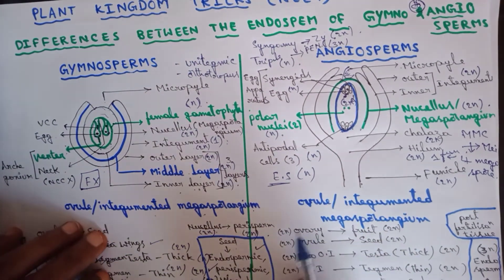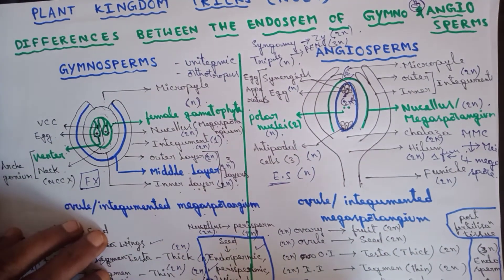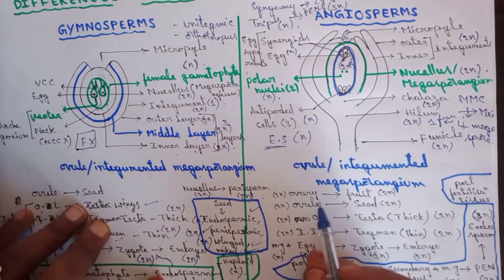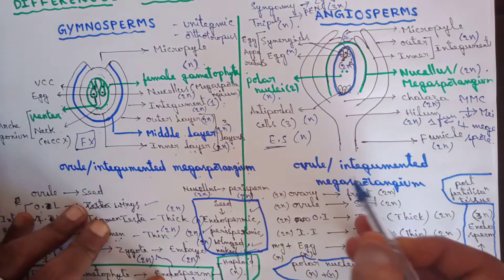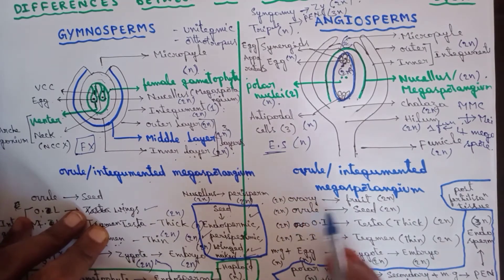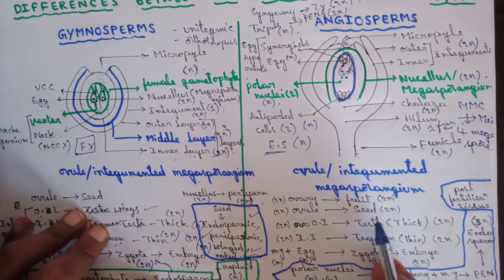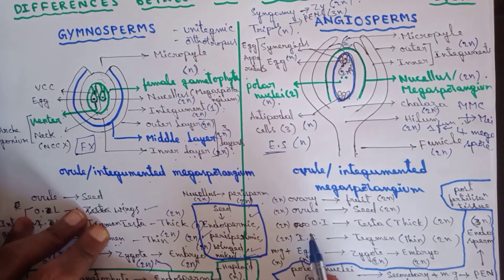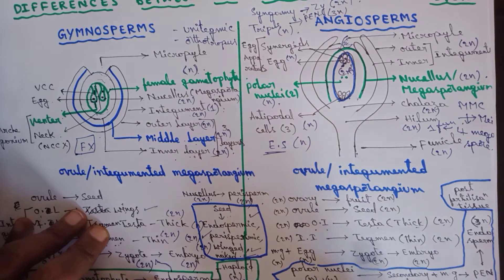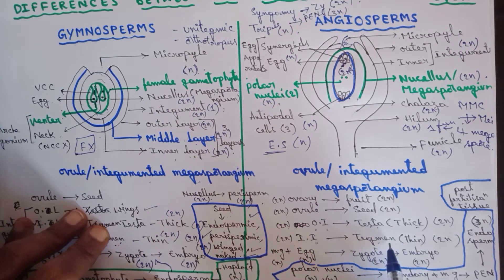After fertilization, the ovary develops into the fruit (diploid). The ovule develops into the seed (also diploid). The outer integument of the ovule develops into testa — the outer layer of the seed coat, which is thick and diploid. The inner integument develops into tegmen — the inner layer of the seed coat, which is thin and also diploid.